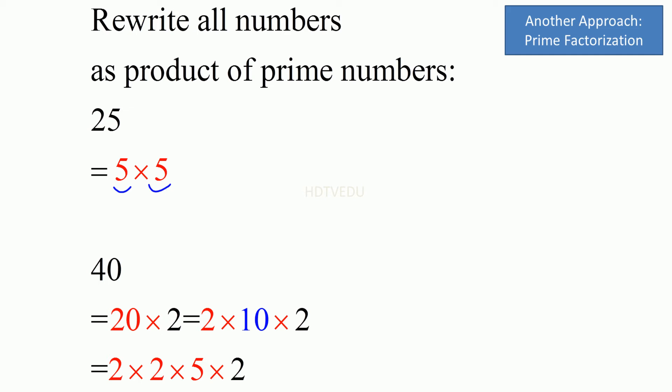How about 40? 40 is 20 times 2. 20 is 2 times 10. So 2 times 10 times 2. 10 is 2 times 5. So we get 3 2s and 1 5.